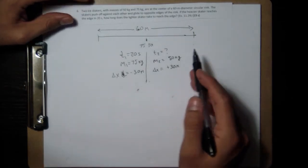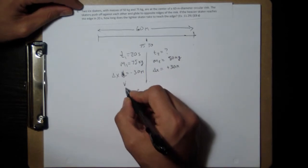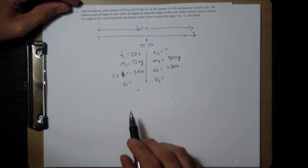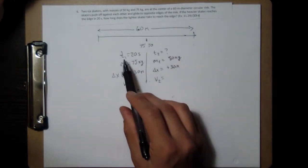And then the velocities, so the velocity for one we don't really know it, for two we don't really know it either, but we're going to be able to figure out the velocities from the distance and the time and then connect them through the momentum.